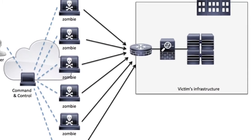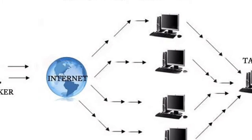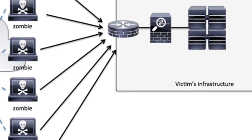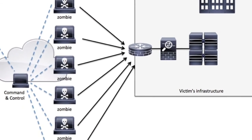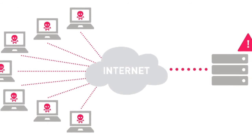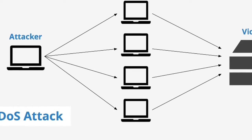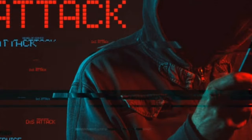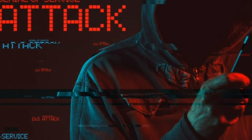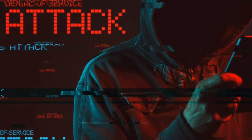DoS attack is one type of attack on websites and servers — it causes them to crash. For example, Amazon has a limit of 10,000 visitors per minute. If that limit is exceeded, the website crashes and goes down.